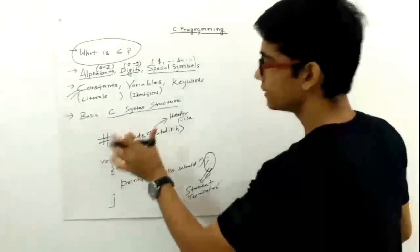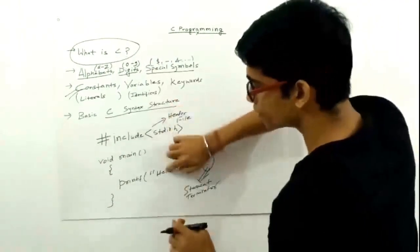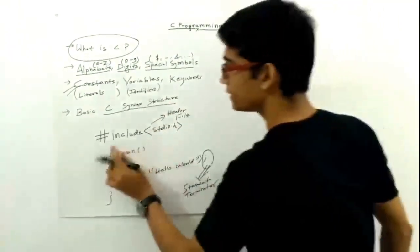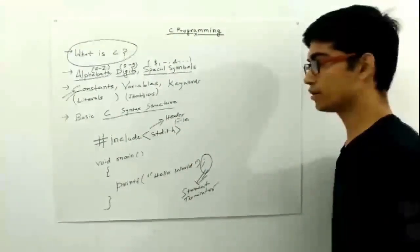This is a header file. For now, assume that whenever we write printf, this is required. There is some mechanism, some communication between these two. We will analyze in depth what this header file will be doing. For now, we will write it in every C program.